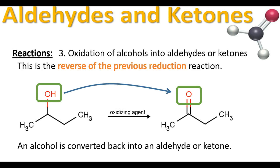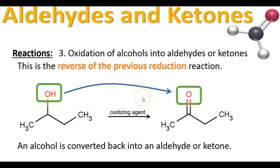Our third reaction is oxidation of alcohols into aldehydes or ketones, depending on where the alcohol starts. This is the reverse of the previous reduction reaction. You add an oxidizing reagent to the alcohol; both hydrogens go with the oxygen in the oxidizing agent, and the bond folds over to make a double bond, converting the alcohol back into an aldehyde or ketone. What determines which one forms is where the alcohol is located: if it's on an end carbon it will be an aldehyde; if it's on a middle carbon, it will be a ketone.